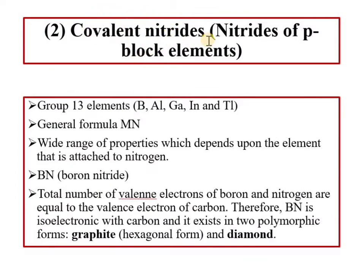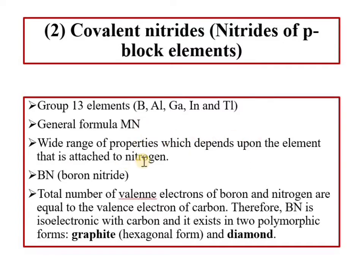The second class is covalent nitrides, formed by p-block elements. Just as carbides are made by group 13 elements, nitrides are also made by group 13 elements as covalent nitrides. The general formula for covalent nitrides is MN.